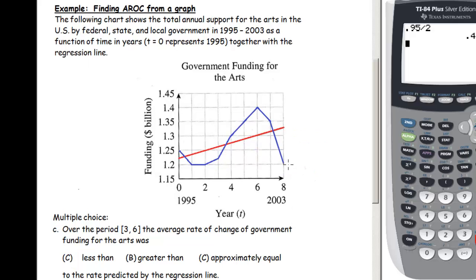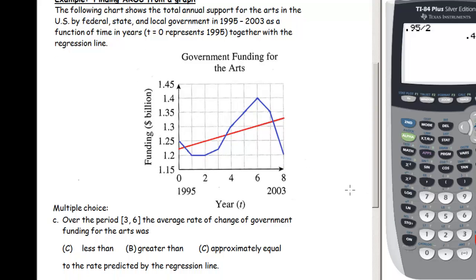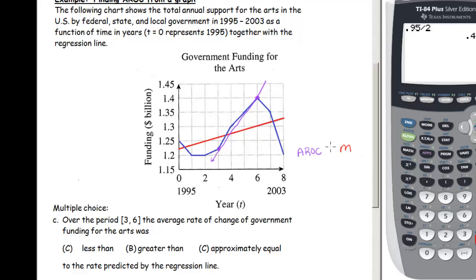For the interval 3 to 6, we draw the secant line between those two points. Both the secant and regression lines have positive slopes, but the purple secant line is steeper than the red regression line. So the average rate of change is greater than the slope of the regression line.